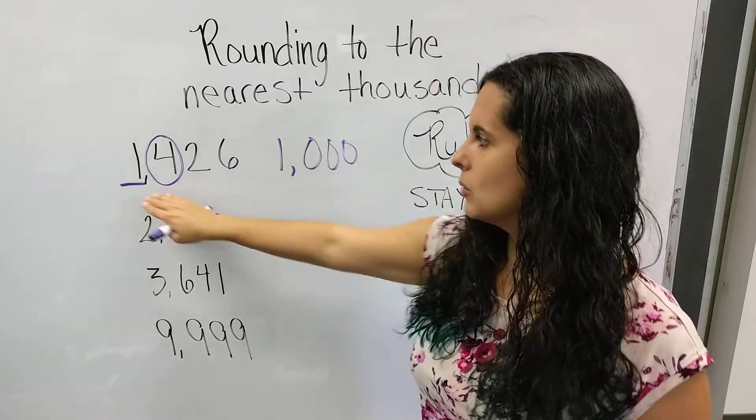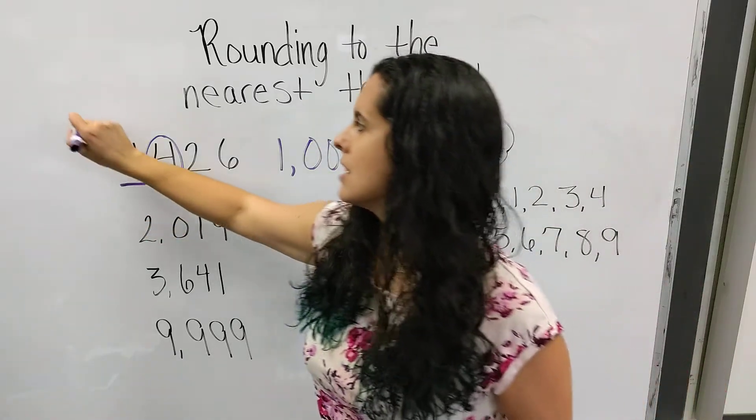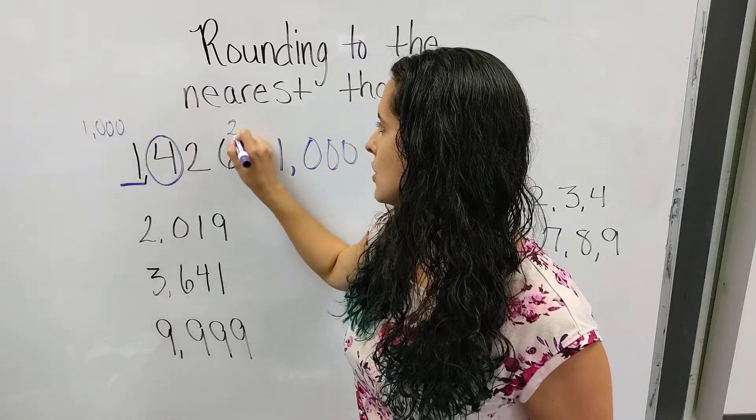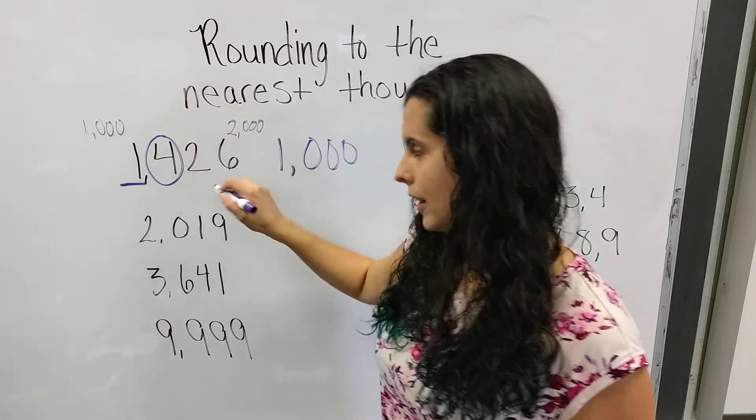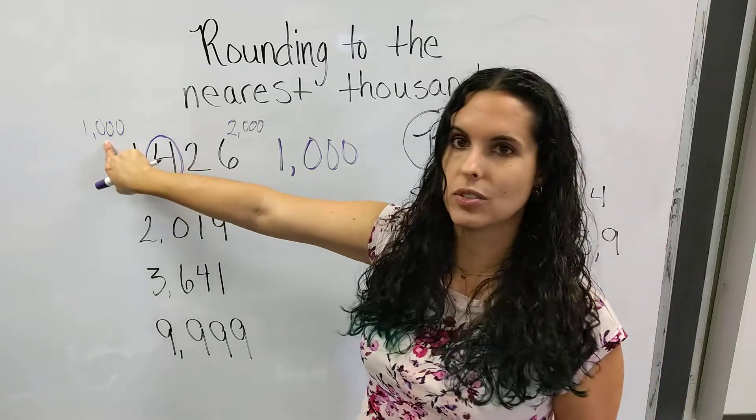So on a number line, 1,426 is between 1,000 and 2,000 on a number line. But the 4 says stay at 1,000.